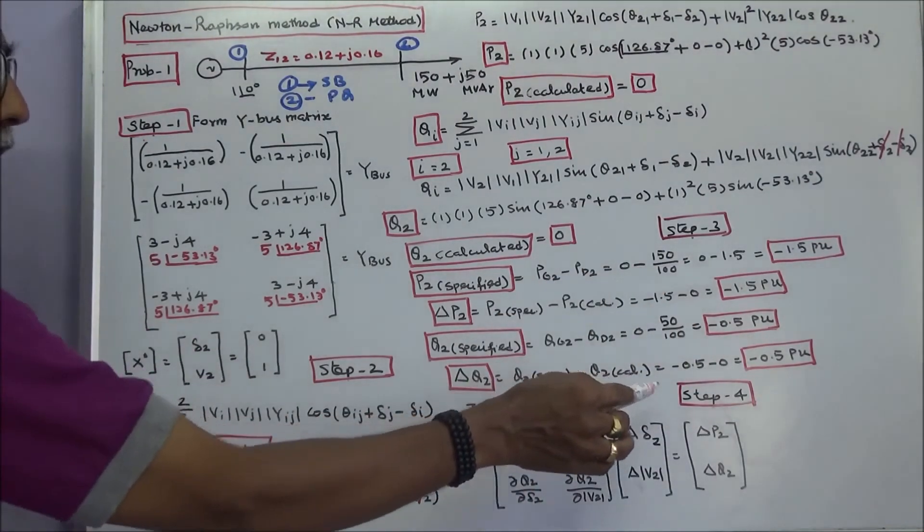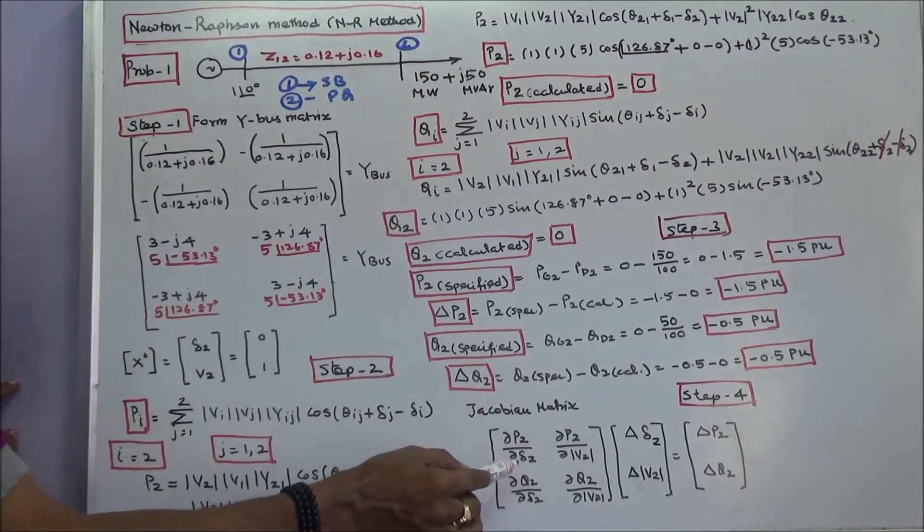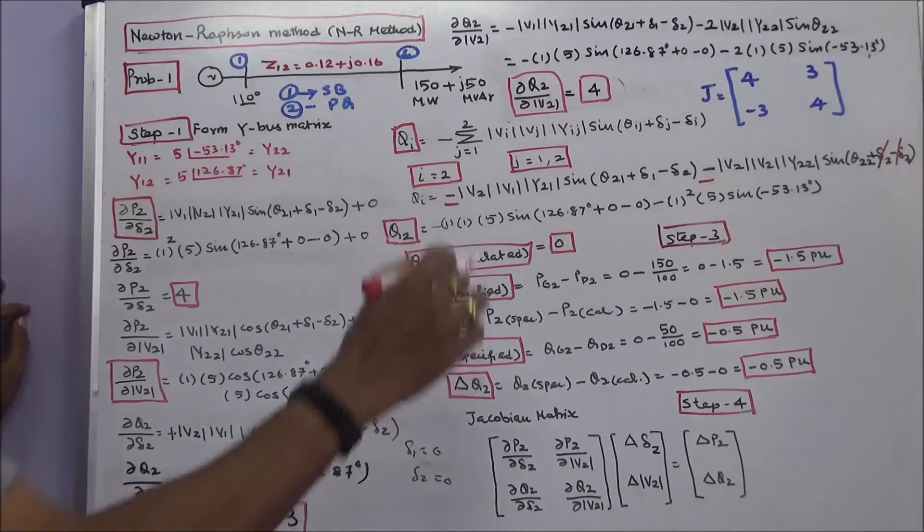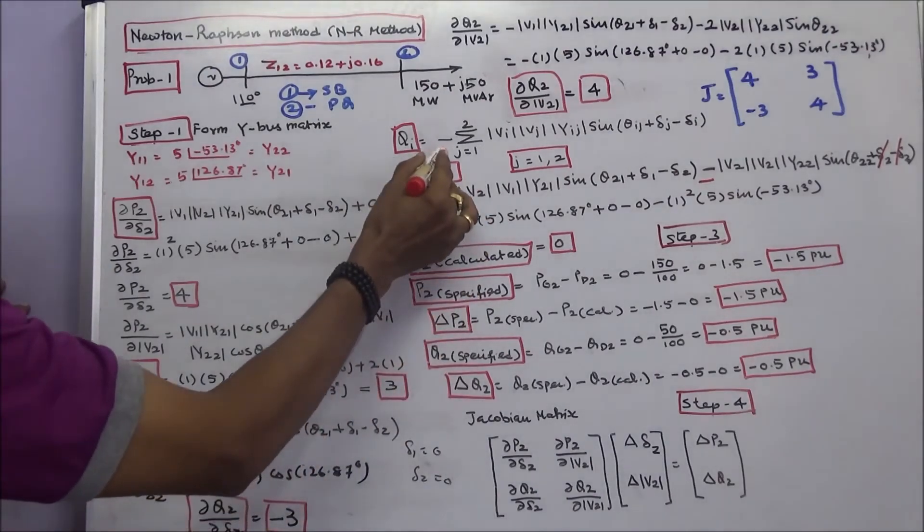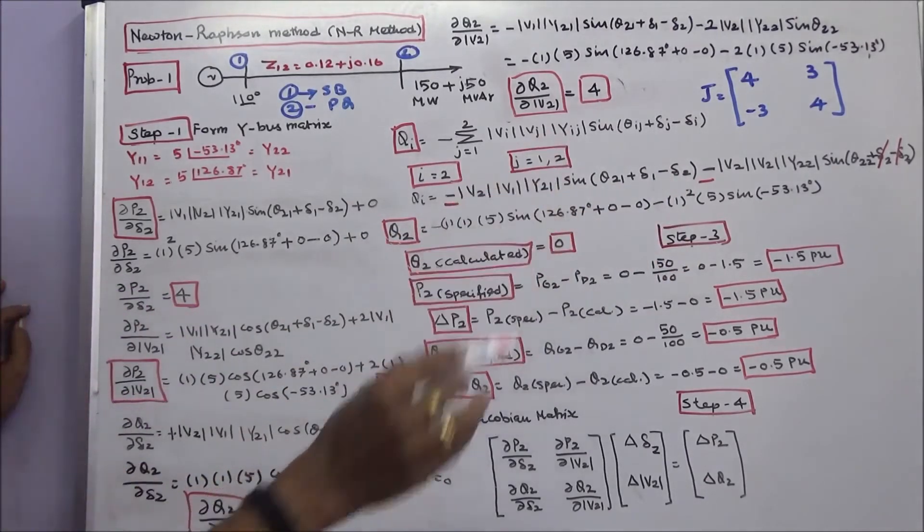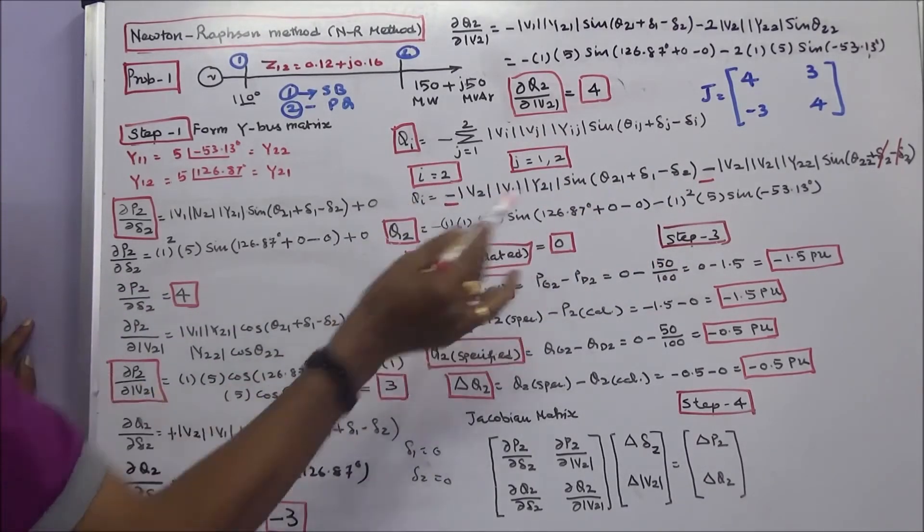Fourth step: I have to find the elements of the Jacobian matrix. I did a mistake. Qi equals minus - this is minus. Therefore, Qi equals minus sign, this is minus sign, not a plus sign. The answer Q2 calculated is 0.